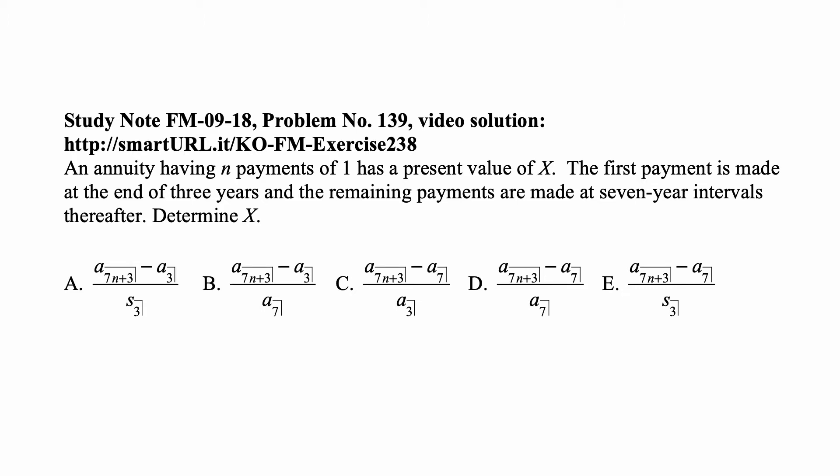An annuity having n payments of 1 has a present value of x. The first payment is made at the end of 3 years and the remaining payments are made at 7 year intervals thereafter. You determine x and you have to determine x as one of those formulas. Remember, x is the present value of all these payments.